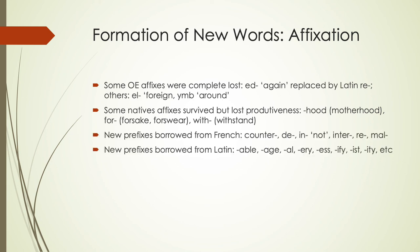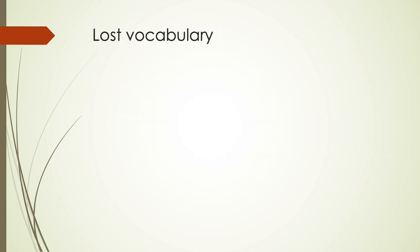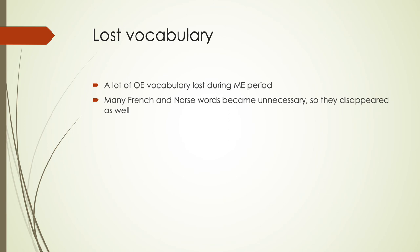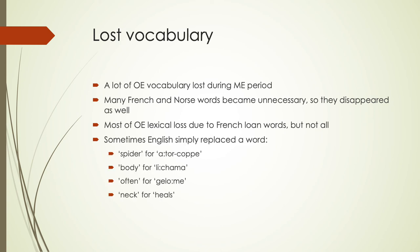We start seeing lots of new prefixes borrowed from French and Latin that we didn't have in Old English, with more derivational affixes that change or create new words. We also lost a lot of vocabulary from Old English during this time — French and Norse words became unnecessary and disappeared. Most of the lexical loss in Old English was due to French loanwords, but not always. Sometimes we just didn't need a word, or replaced it — for example, 'spider' replaced an Old English form, and words for 'body,' 'neck,' and others also changed.